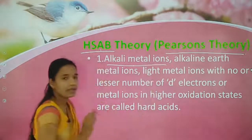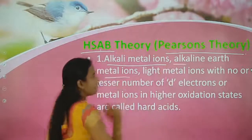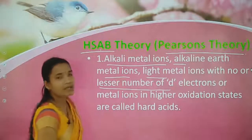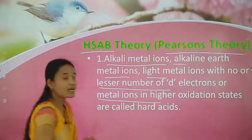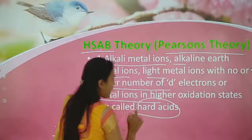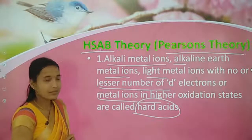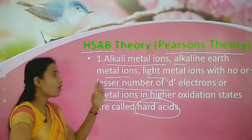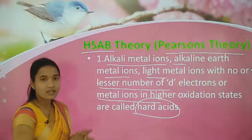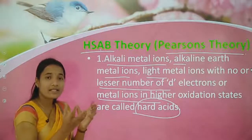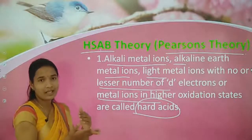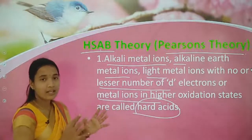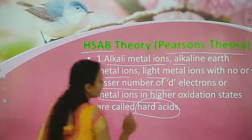First, let's look at hard acids. Alkali metal ions, alkaline earth metal ions, and light metal ions with no or a lesser number of d-electrons, or metal ions in a higher oxidation state, are called hard acids.